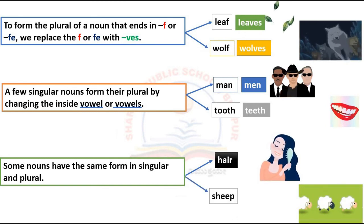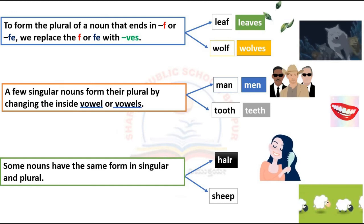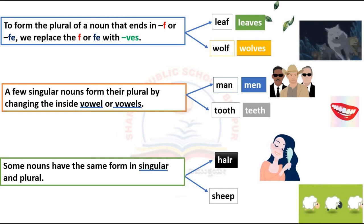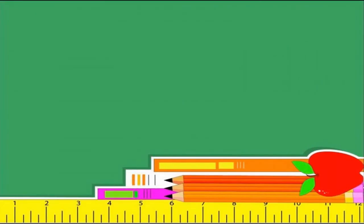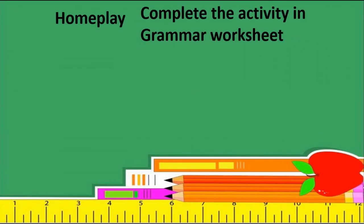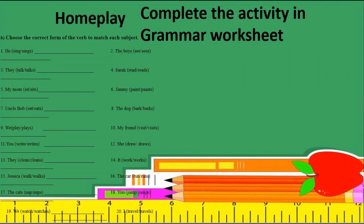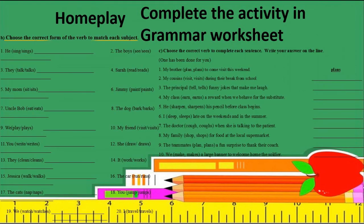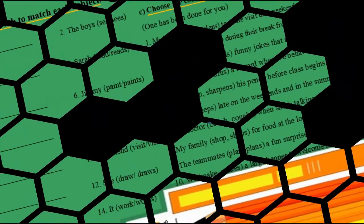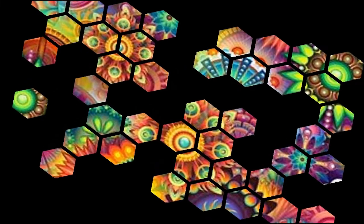So children, these are the rules for forming plural nouns. Your homework is to complete the activity in the grammar worksheet — that is, activity B and activity C. You must refer to this video and follow the rules to be able to complete the activity. That's all for today, children. Thank you.